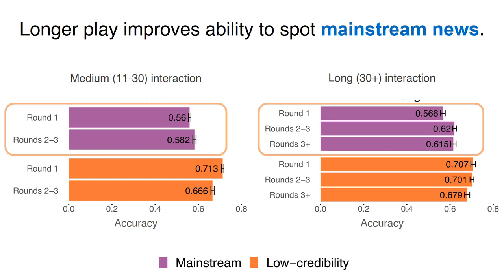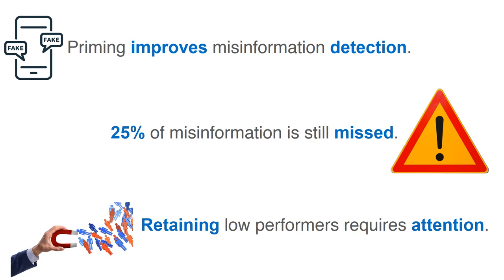These results demonstrate the learning effect of FAKEY. Playing the game for more than 3 rounds improves recognition of mainstream articles without affecting detection of low-credibility content. Yet players do not get better at recognizing questionable articles, which underscores the challenge of quickly dismissing such content as fake. This might also be affected by the fact that not all content from low-credibility sources contains misinformation. Our findings show that a game that primes people to fact-check can make them more careful about trusting online content. However, even when players were explicitly primed, more than a quarter of questionable content was shared without verification, and players also became more suspicious of legitimate content. Finding the right balance between excessive suspicion and insufficient scrutiny is an important challenge for future research. Since players who continue beyond the first round improve their performance, further research is needed to find techniques that retain players who do not perform well in initial rounds.